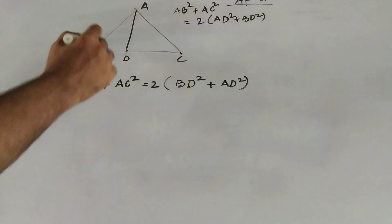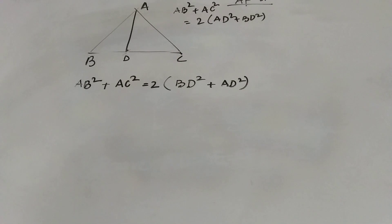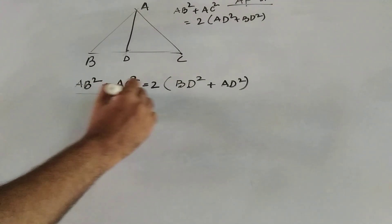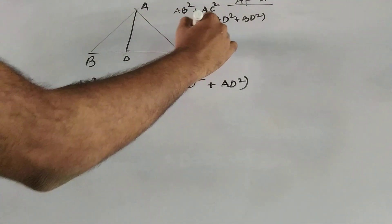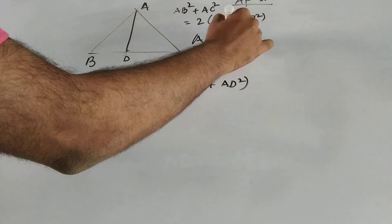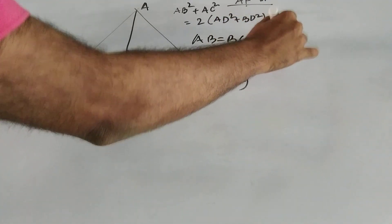Now let us consider ABC to be an equilateral triangle. For that purpose, we know that same formula will be applied, but there are some special characteristics of an equilateral triangle. All the sides of this triangle are equal. So for our case, AB equal to BC equal to AC.